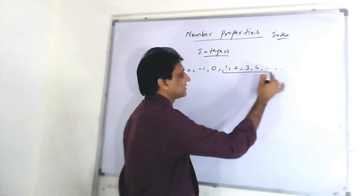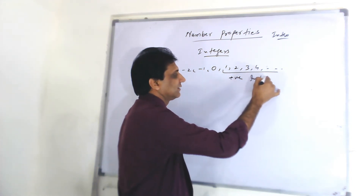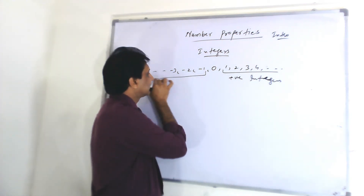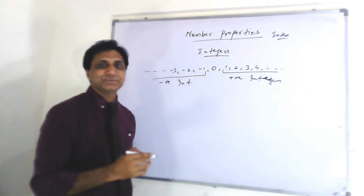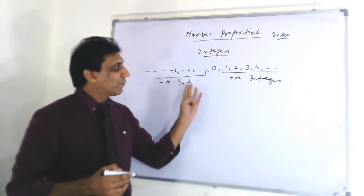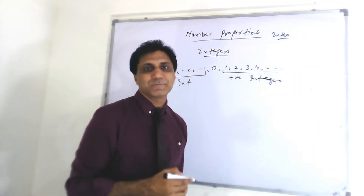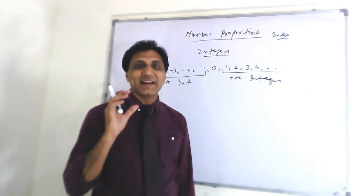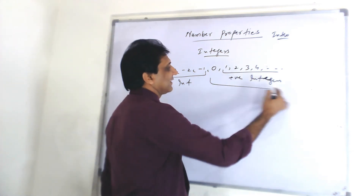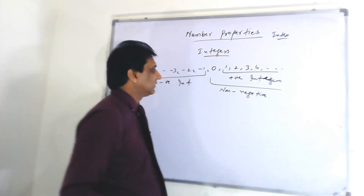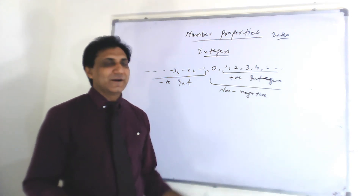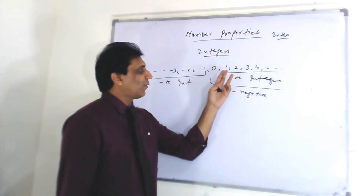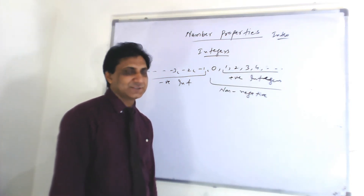On the number line, these are positive integers. Zero won't be included in the positive integers. Negative integers are negative one, negative two, negative three, negative four, and so on. Positive integers are one, two, three, four, five, and so on. Zero is neither positive nor negative. When I ask you what are non-negative integers, these are non-negative integers — zero, one, two, three, four. All numbers but not negative.